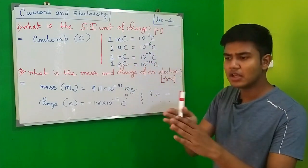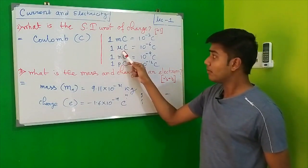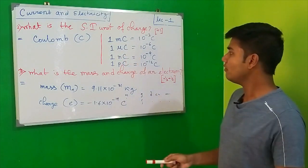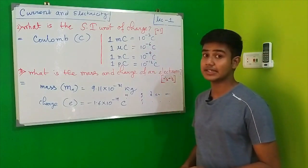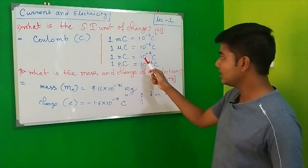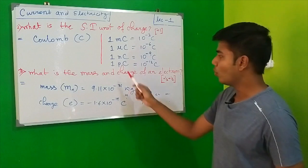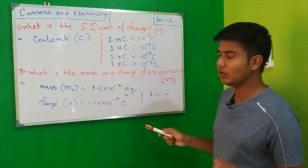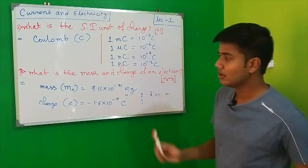One microcoulomb: for micro we always use 10⁻⁶. One nanocoulomb is 10⁻⁹ coulomb. Lastly, 1 picocoulomb (P for pico) is 10⁻¹² coulomb.